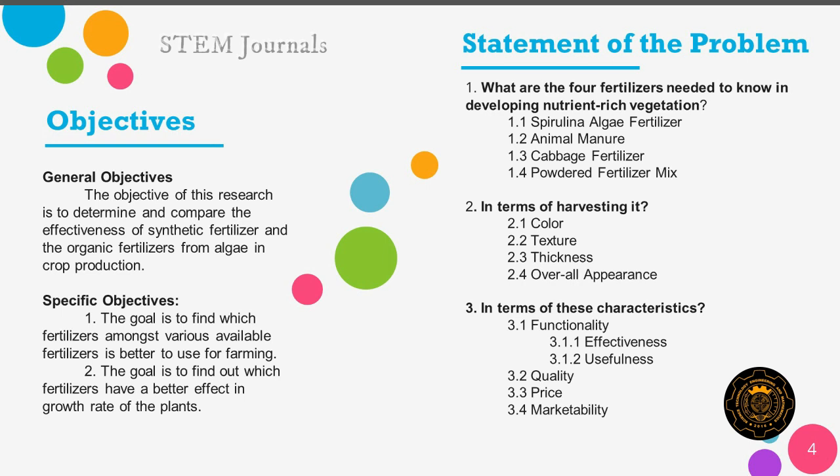The second question is: what is the aesthetic of spirulina algae fertilizer in terms of harvesting it? The first consideration is color. Next is texture — the researchers need to see the texture of the algae to determine if it is ready to be harvested. The third is thickness, and the last one is overall appearance. All these characteristics are necessary in evaluating the algae fertilizer.